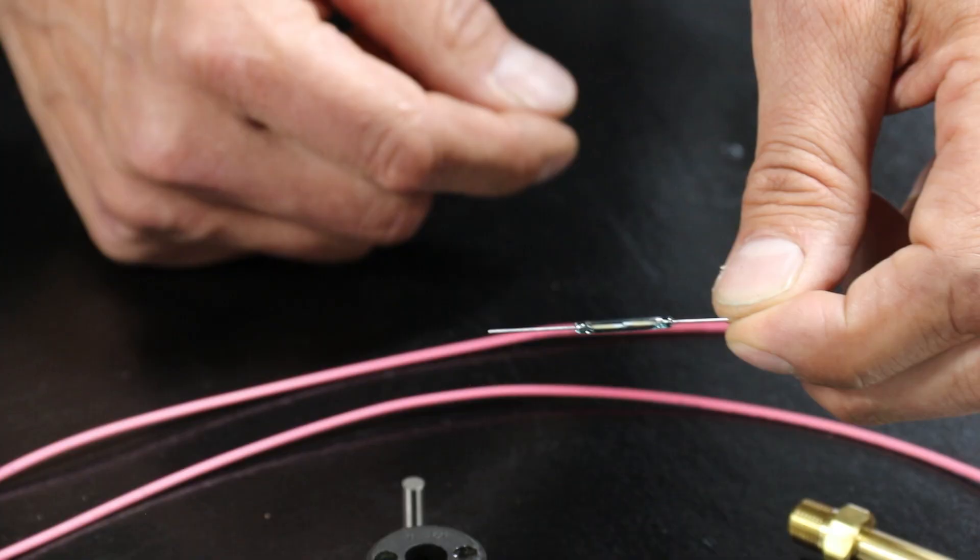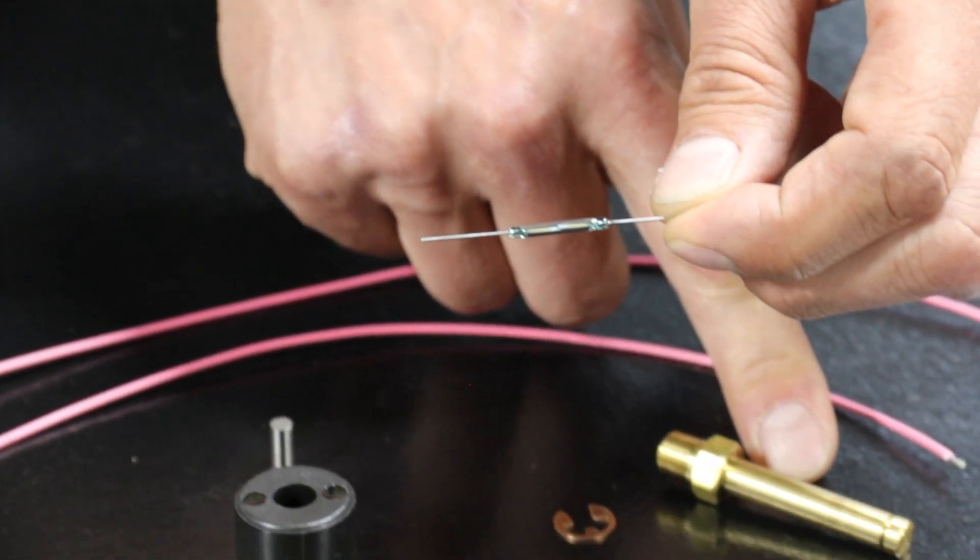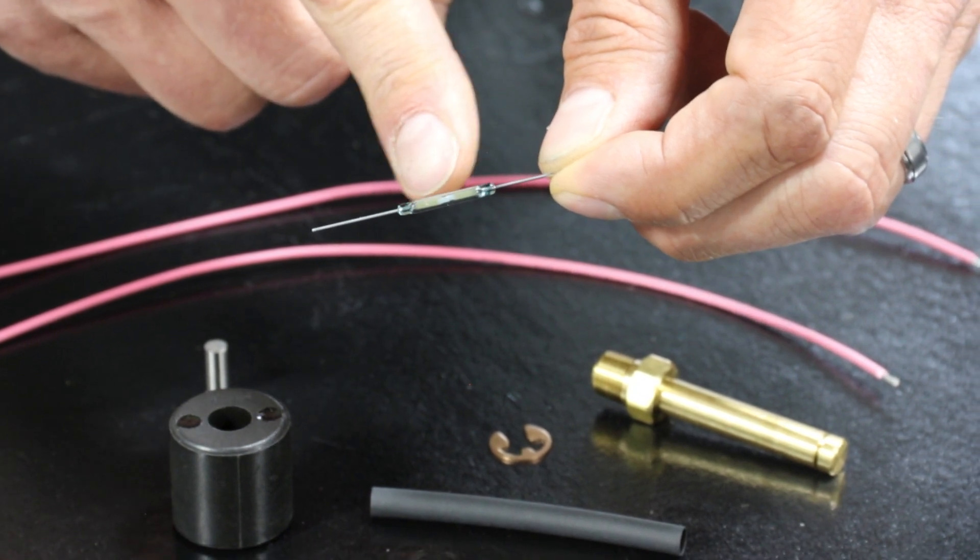Let's start with the reed switch which goes inside the shaft. There are two metal contacts inside which are not touching.